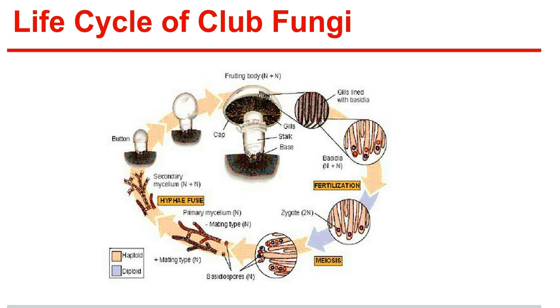Club fungi: the phylum Basidiomycota, or club fungi, gets its name from a specialized reproductive structure that resembles a club. The spore-bearing structure is called a basidium, and it's found on the gills that grow on the underside of mushroom caps.